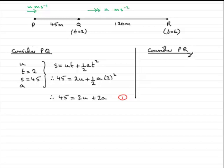Now, if we consider the section PR. Again, we've got the initial velocity, which was U. We know the time. It was 6 seconds. We know the displacement S. It is 45 plus 120. So in other words, 165 meters.